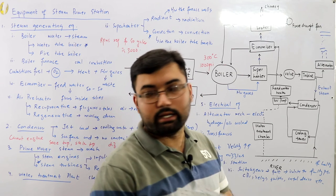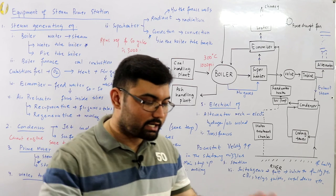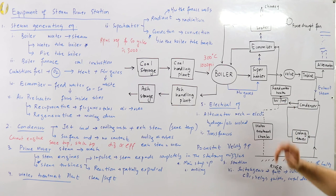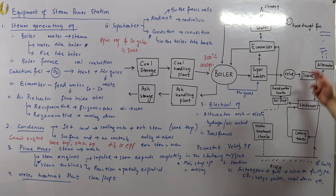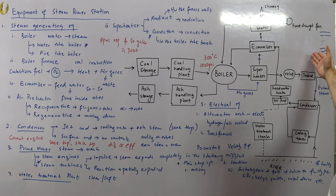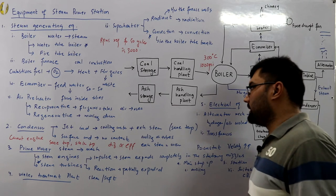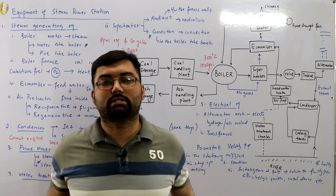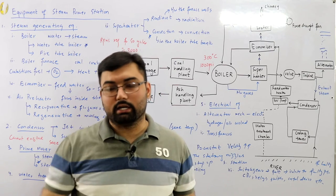In this video we saw the general construction and working of each piece of equipment used in the steam power station. Finally electricity is produced, passed through the transformer, isolators, circuit breakers, and connected to the bus bar. I'll see you in the next video. Till then, take care of yourselves and everyone around you. Do remember me in your prayers, and do subscribe to the channel. Goodbye.